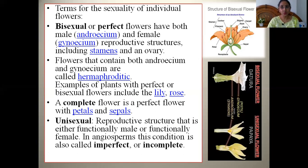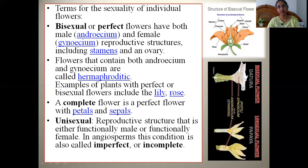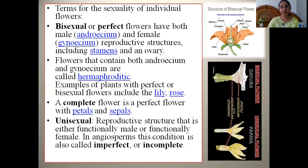The second condition is unisexuality. Unisexual plants are those where the reproductive structures are either functionally male or functionally female — either the androecium is functional or the gynoecium is functional, but not both. That condition is known as an imperfect flower, incomplete flower, or unisexual flower.